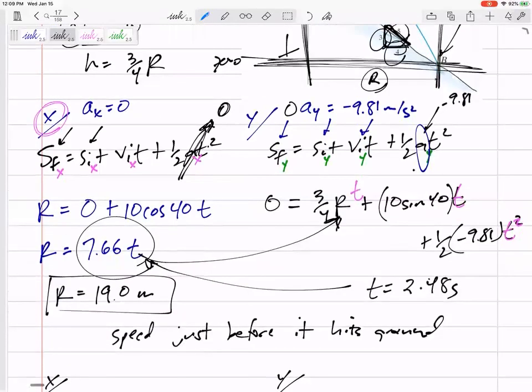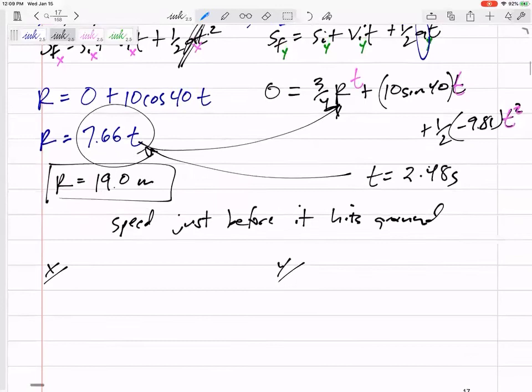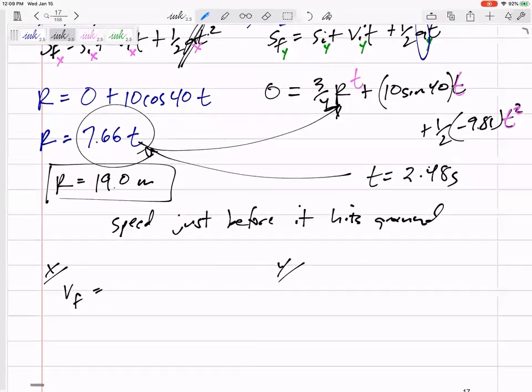All right. Which equation should I use? Well, this equation does not have final velocity in it. So, we would need to use one of the other equations. So, VF equals VI plus AT. Maybe that would be a good one to use. But don't forget to do both components to find the speed.